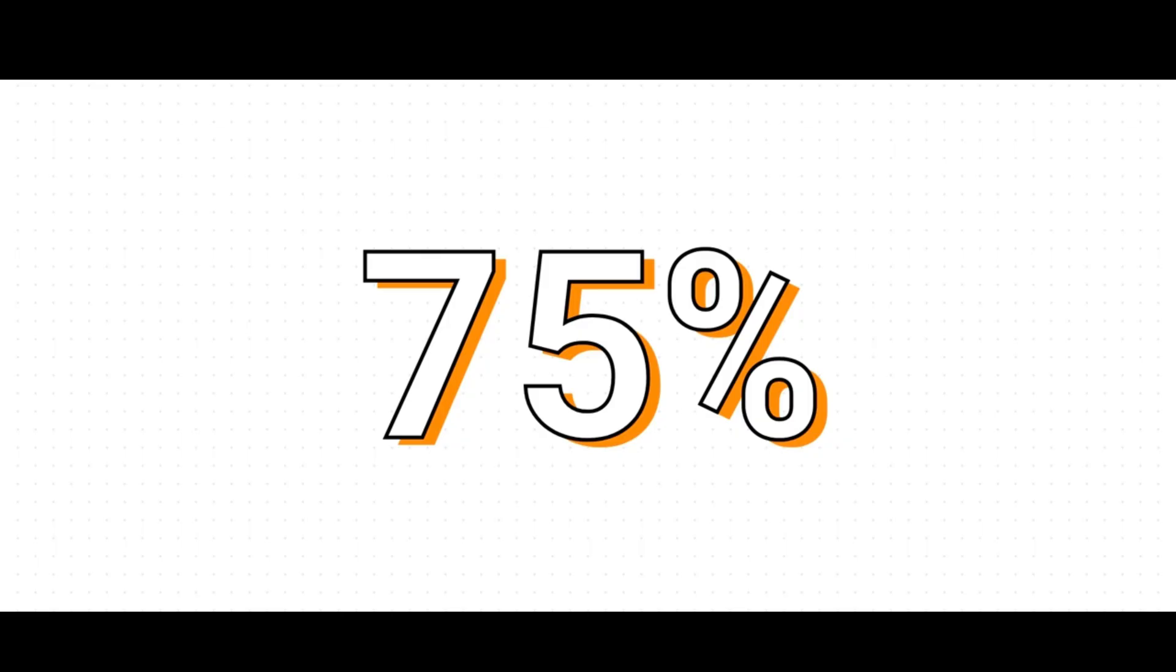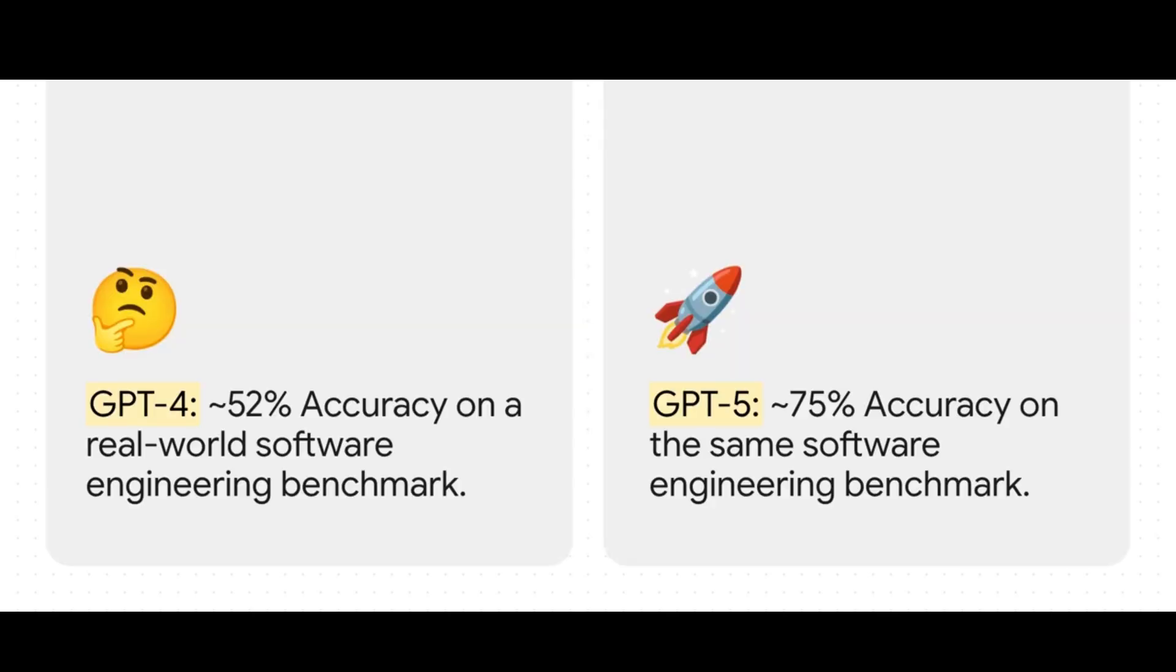If there's one single number you need to know about GPT-5, it's this: 75%. And believe me, this isn't just some small step up. It's a fundamental change in what AI can actually do in the world of software engineering. So what does that 75% really mean? On a benchmark that uses actual real-world software bugs from open-source projects, GPT-5 can solve three out of every four problems it's given. That is a massive jump from GPT-4, which could only handle about half of them.